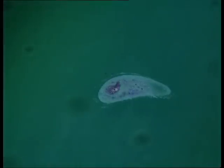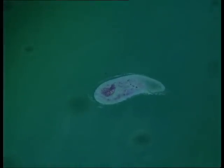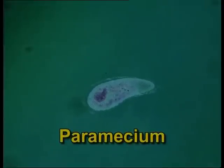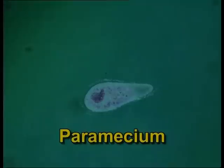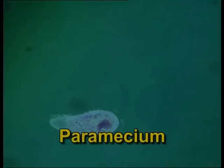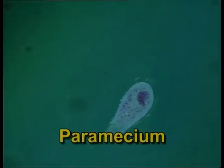This slipper-shaped unicellular organism is called a paramecium. Its body is covered with a lot of cilia, which help it to move. Paramecia move in a spiral manner.